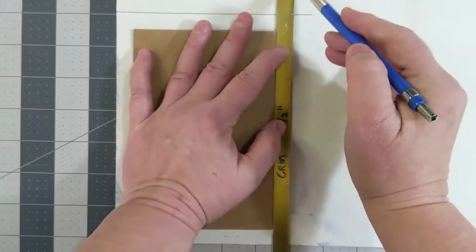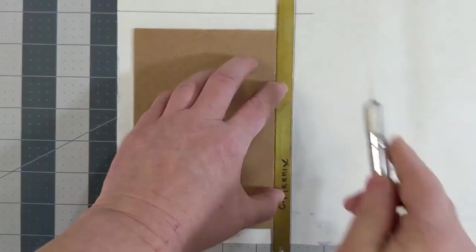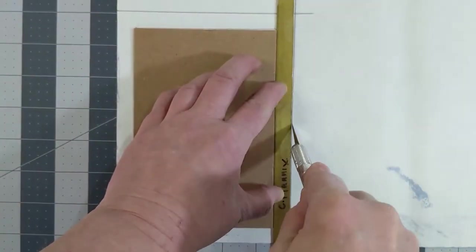I'll also mark where the board is supposed to lay in the middle of the paper. And then you can cut it.